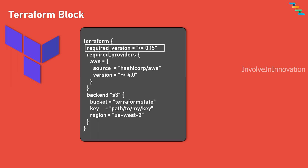The required_version argument allows you to specify the minimum version of Terraform required to apply your configuration. This helps ensure that you have the correct version of Terraform installed before applying changes. For example, required_version >= 0.15 ensures the minimum version installed is 0.15 before proceeding with the configuration.